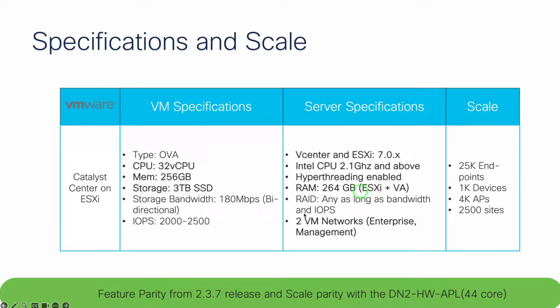For scaling, it matches the DN2. With feature parity on 2.3.7, the scale numbers are the same: 25,000 endpoints, 1,000 devices including switches and routers, 4,000 access points, and 2,500 sites when creating your hierarchy. Remember to plan ahead and create your VM networks on your ESXi server.